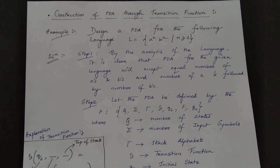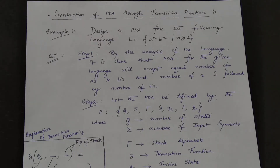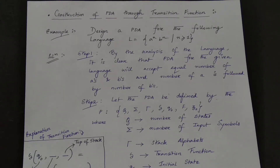I have written down the first example showing how to write in your examination. For examples two and three, I will show you the transition graph and the transition table. The first example is: design a PDA for the language L = {a^n b^n | n ≥ 1}. A similar example with 0^n 1^n was explained in Lecture 1 using the transition graph. Now I will show how to use the transition function.